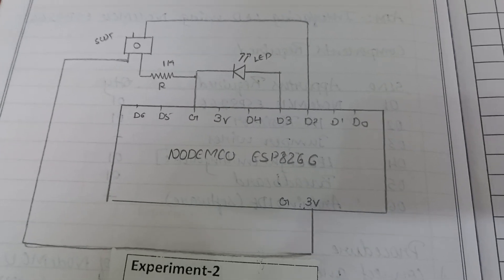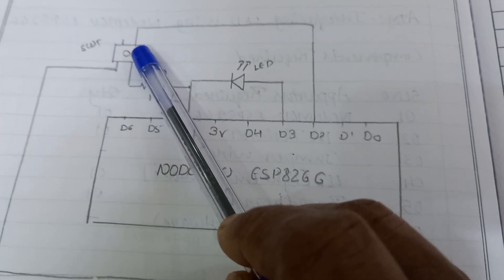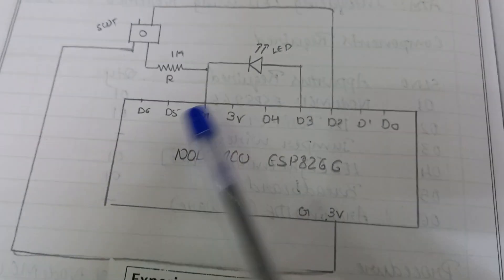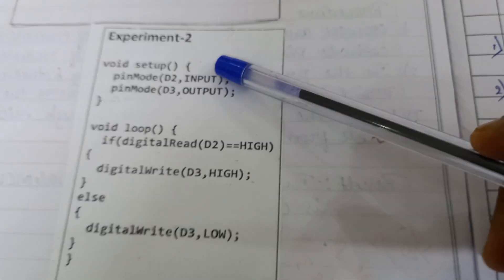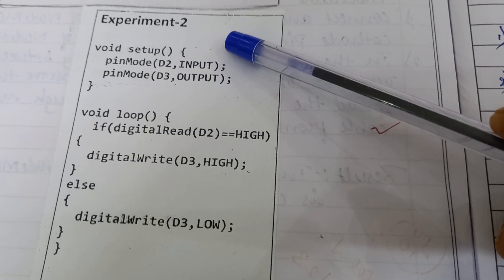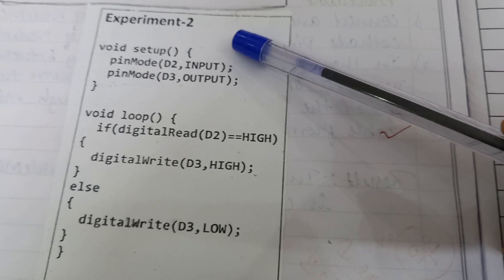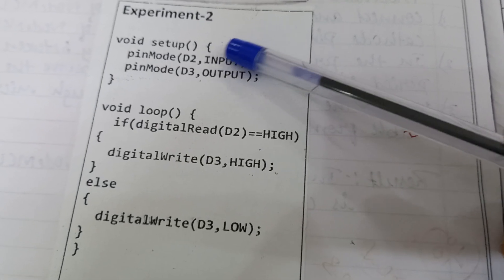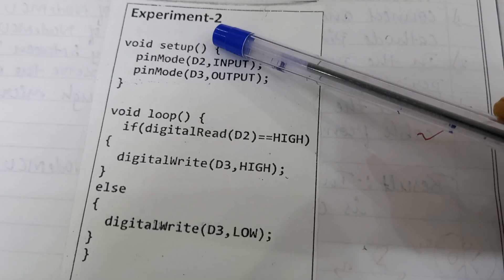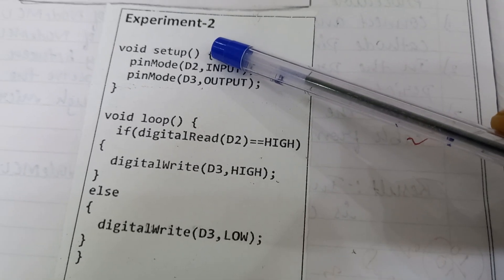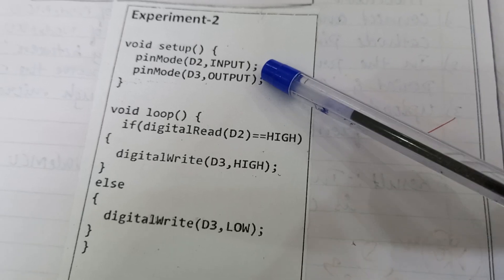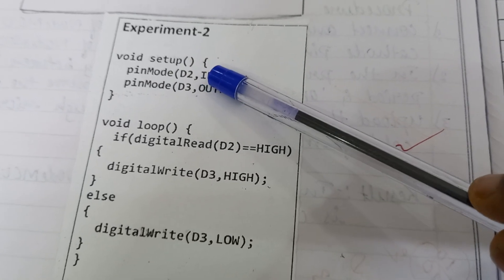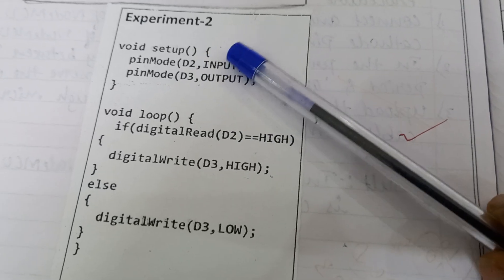When we press the switch the LED turns on; when we release it the LED will be turned off. Now, for the program: there is a void setup function which is executed only once when the board starts up, and it is used to initialize pin modes and other configurations. Initialization is done within this setup function.